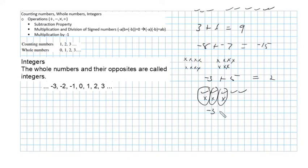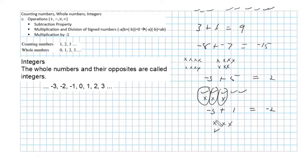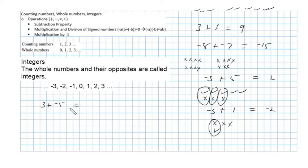We could also have minus 3 plus 1, and of course you know this would be minus 2. We can see this as 3 x's and 1 check mark — that leaves me with 2 x's, which is minus 2. And let's look at 3 plus a minus 5 — I hope most of you can see right off the bat that the answer is going to be minus 2.